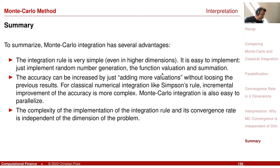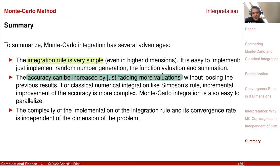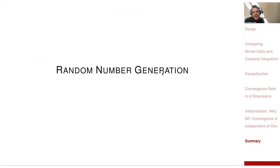Summary: Monte Carlo integration has nice advantages — it's very simple, we can increase the accuracy by just adding more evaluations, and the convergence rate is independent of the dimension. That was it for the Monte Carlo method. Now comes the next building block: how do we generate such a random number sequence?